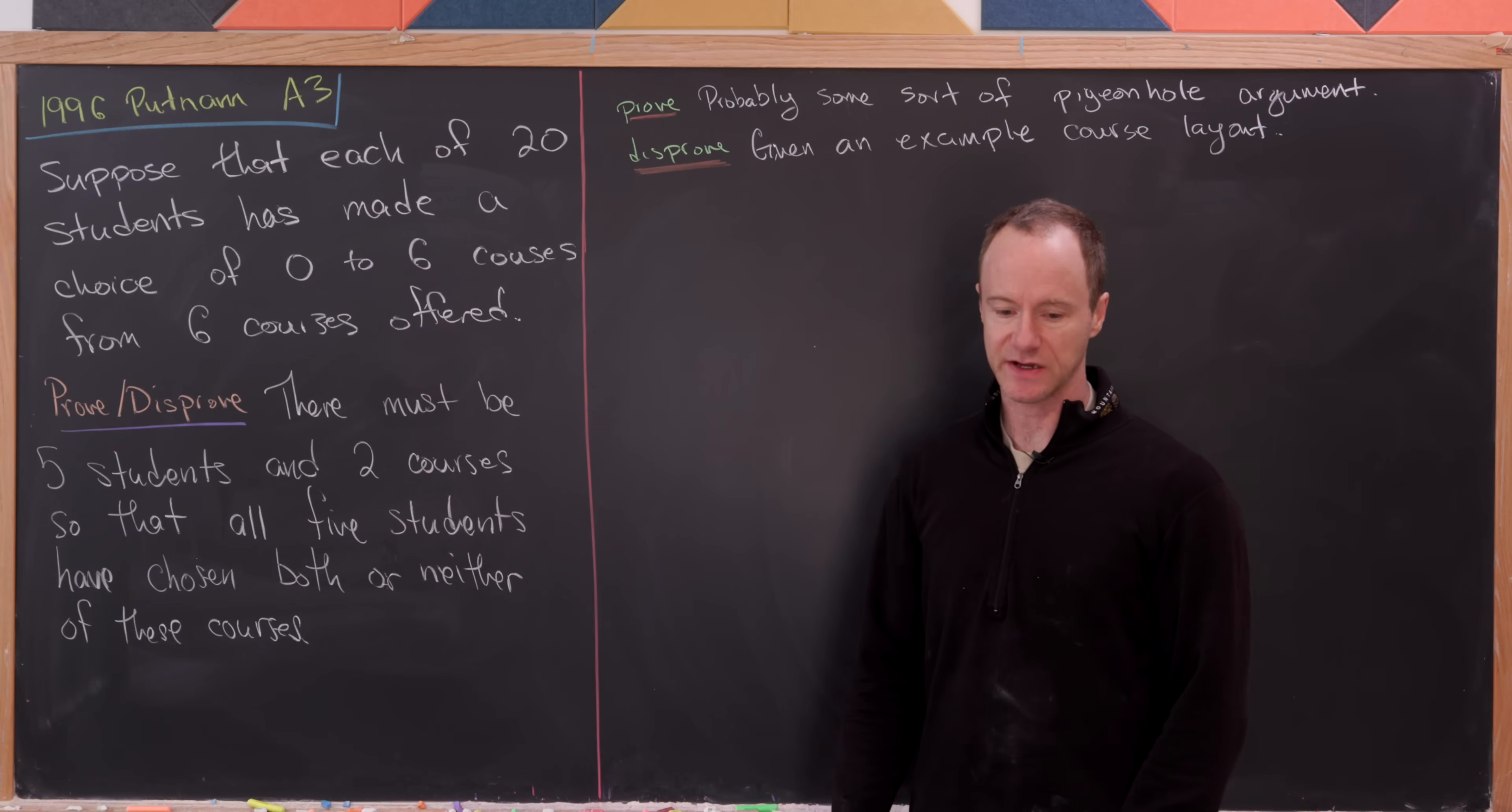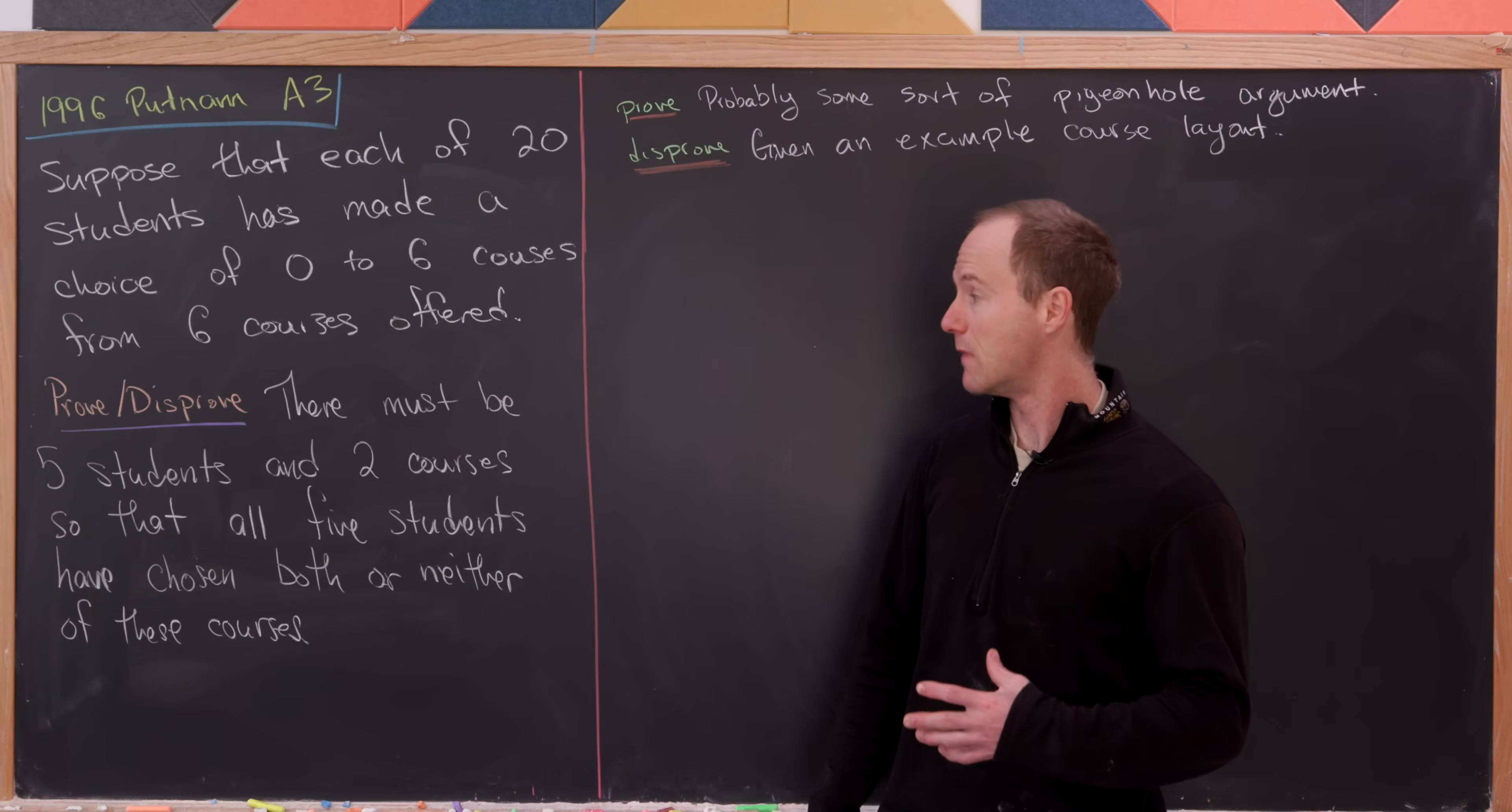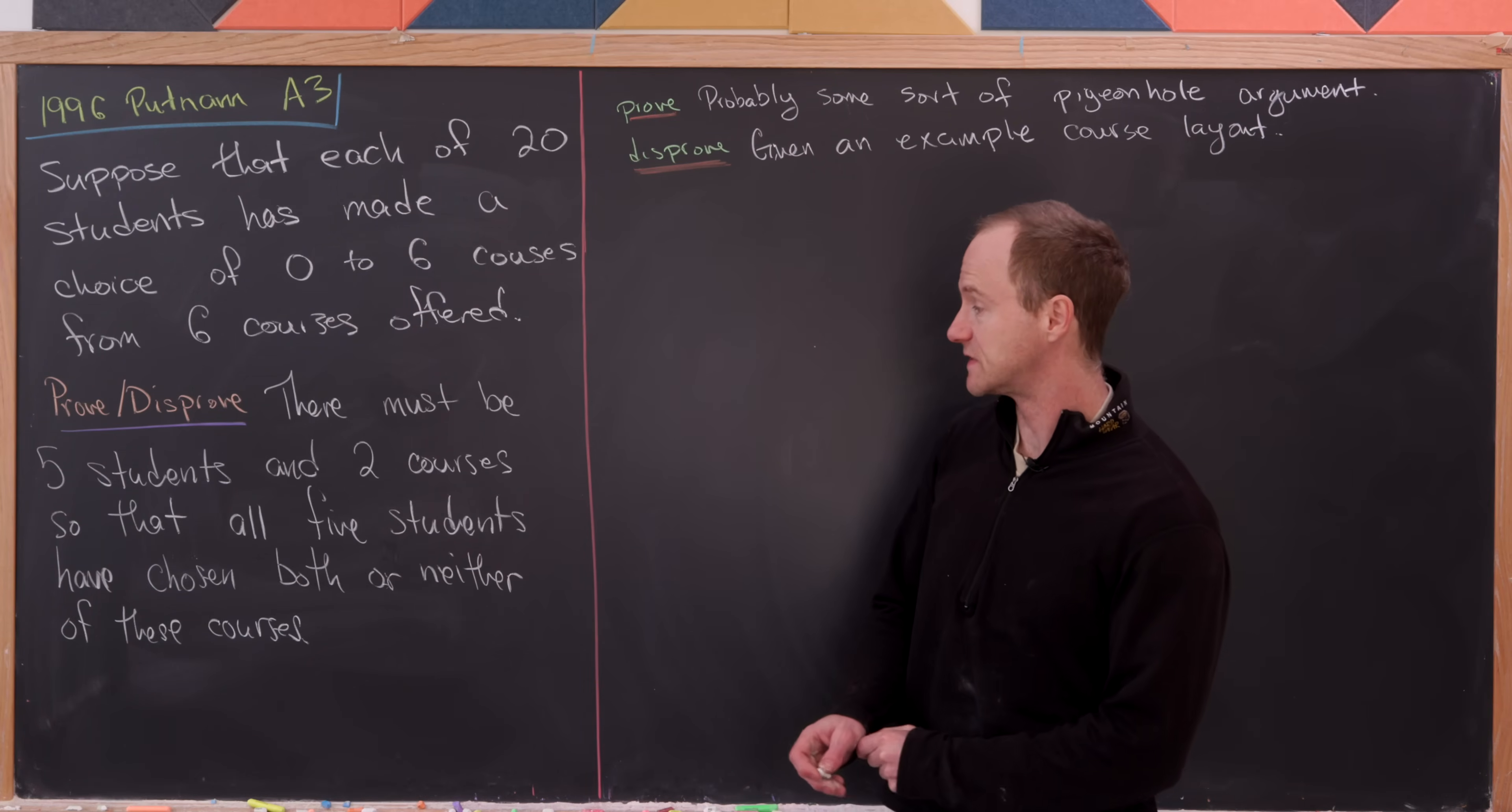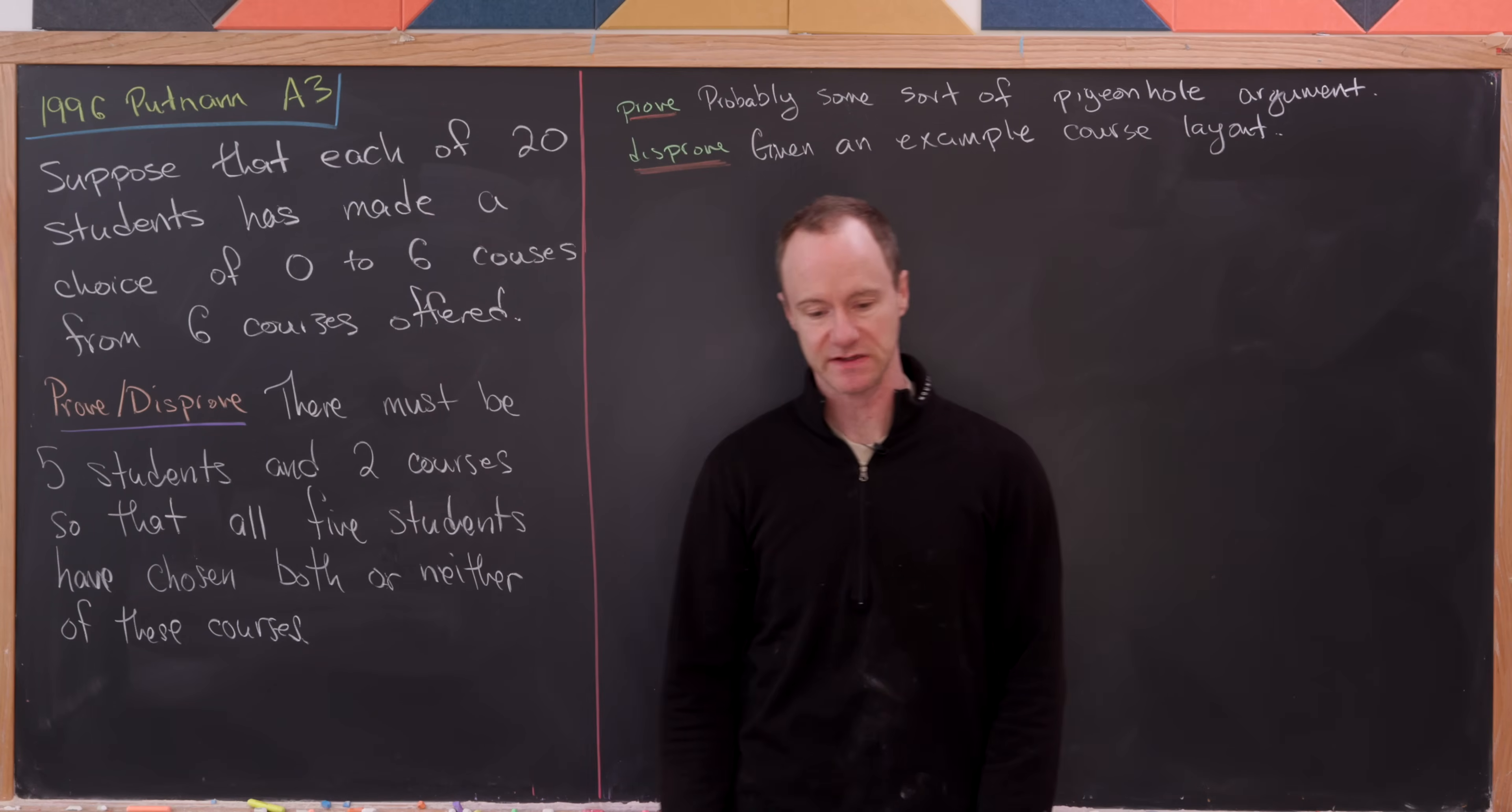And then the goal here is to prove or disprove the following statement. And that statement is that there must be five students and two courses so that all five students have chosen both of these courses or neither of these courses.